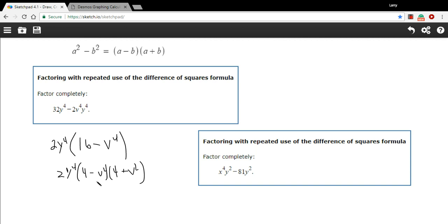Right here, we have 4 minus v squared. Well, that's a difference of squares as well, and that can become 2 minus v times 2 plus v.